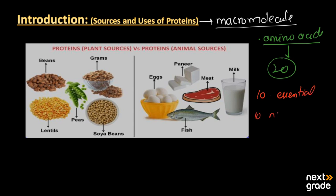The other 10 are non-essential amino acids. The simple difference between these two is that essential amino acids cannot be prepared by our body, while non-essential amino acids can be prepared by our body. These 20 amino acids combine in different ways, making up the proteins. Now let's look at some sources of proteins — we have two types of sources: the plant source and the animal source.